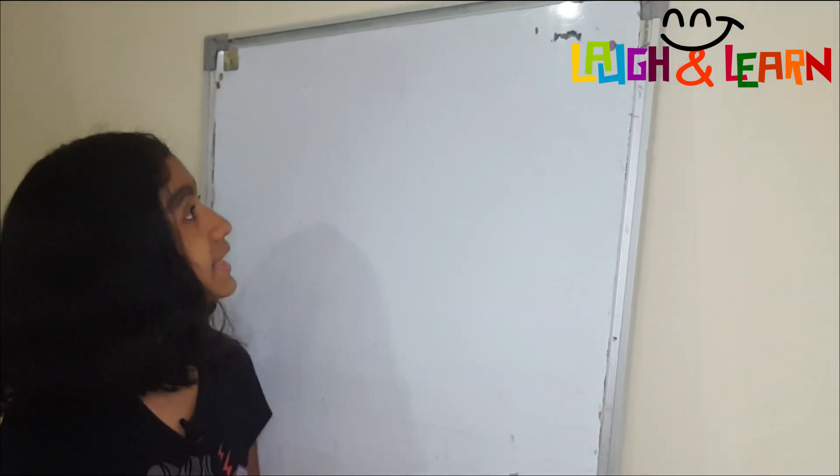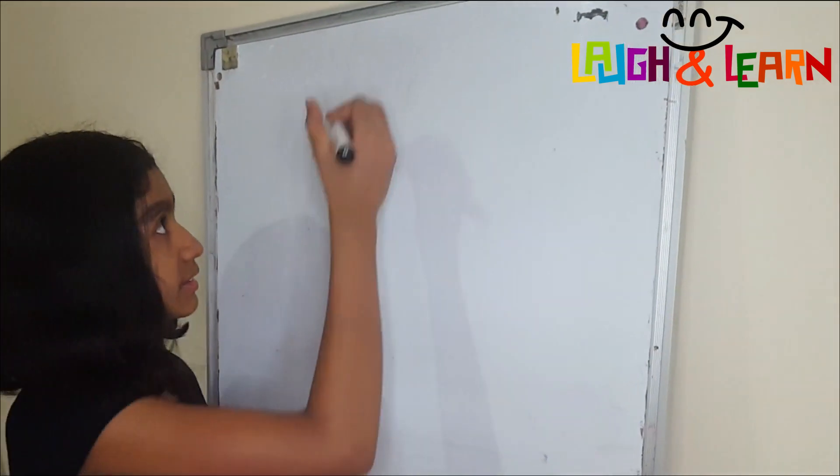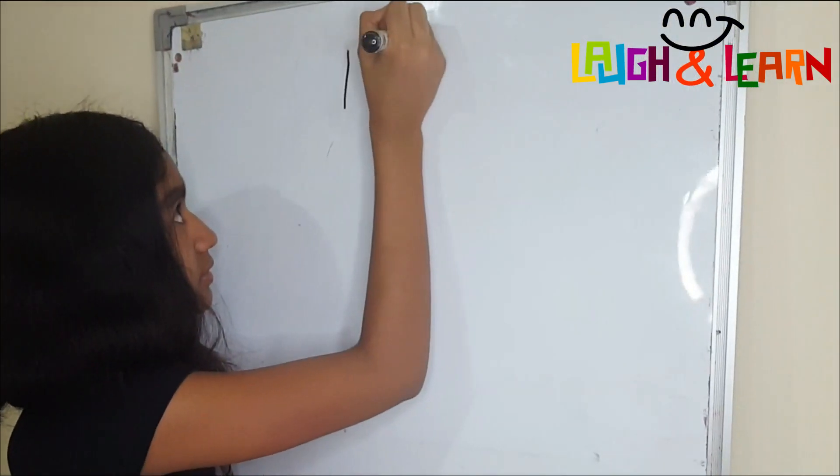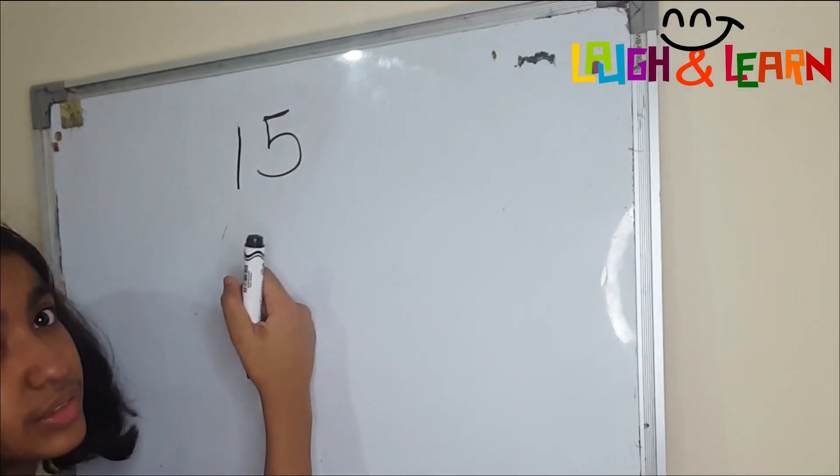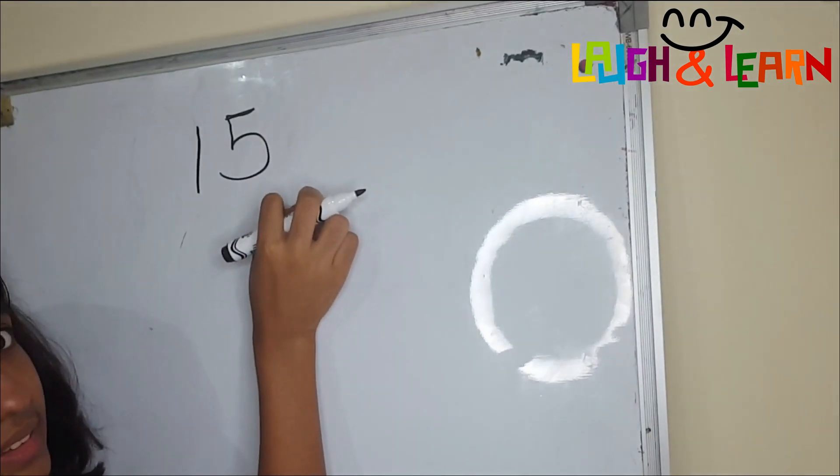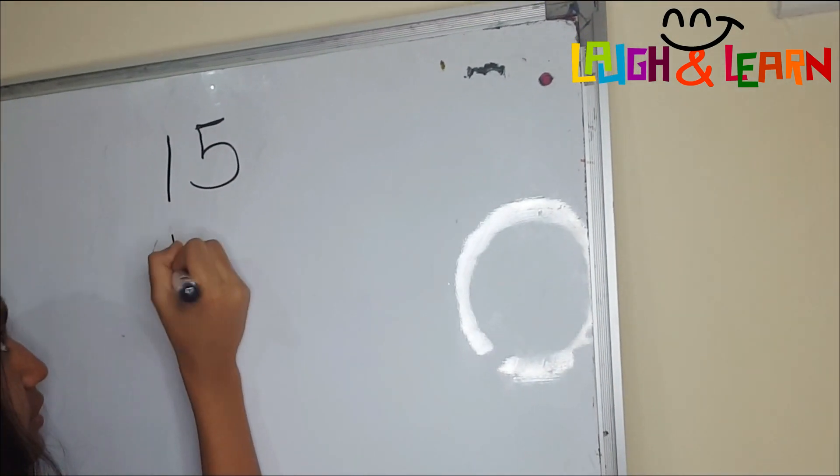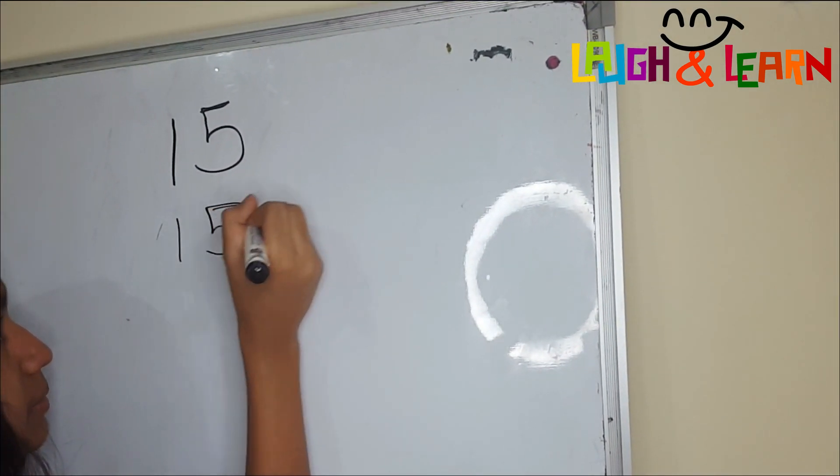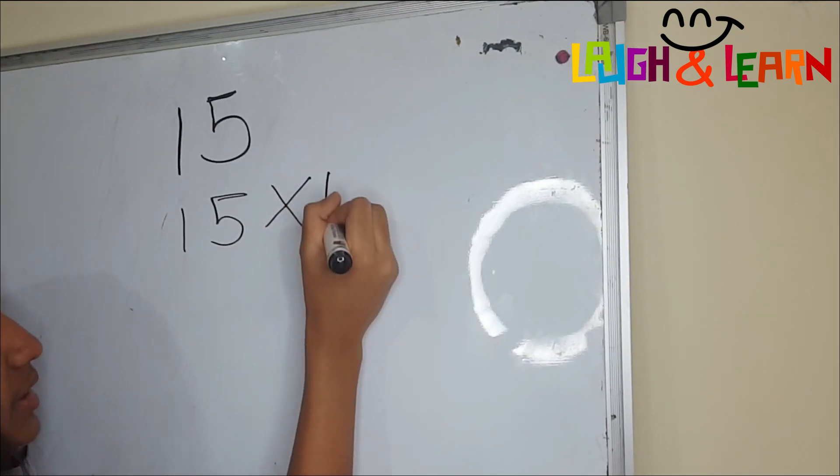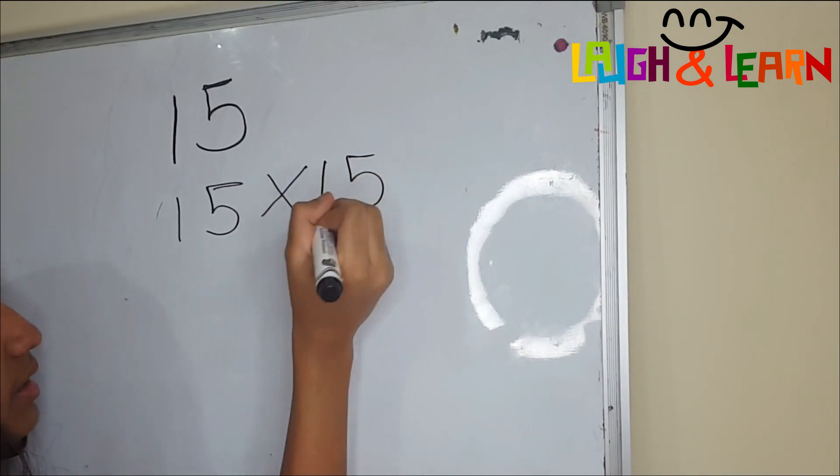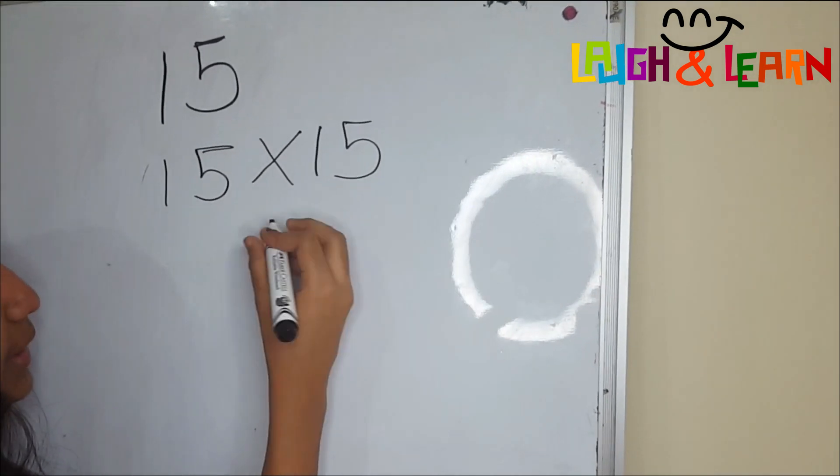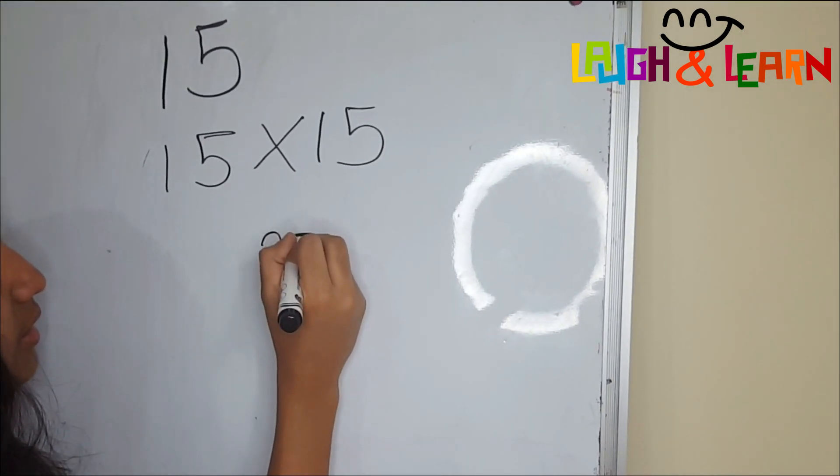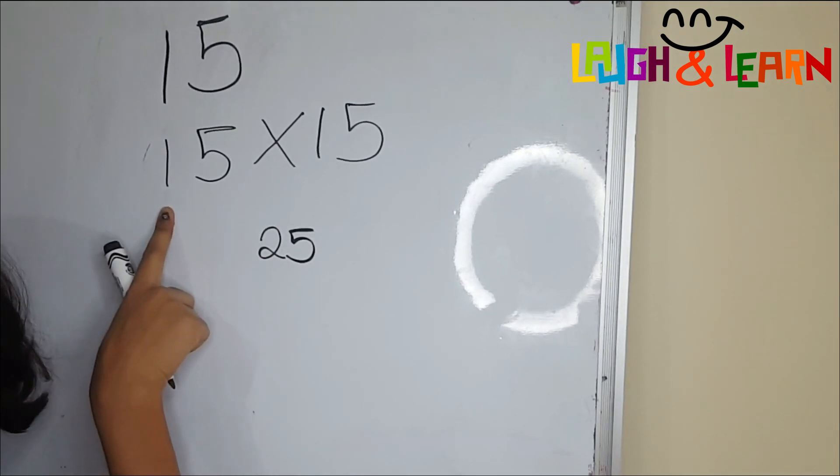So let's start with the number 15. First we have to multiply this by the same number, so 15 multiplied by 15. First you multiply 5 and 5 which is 25, then the nearest number to 1 is 2, so that will be 2...